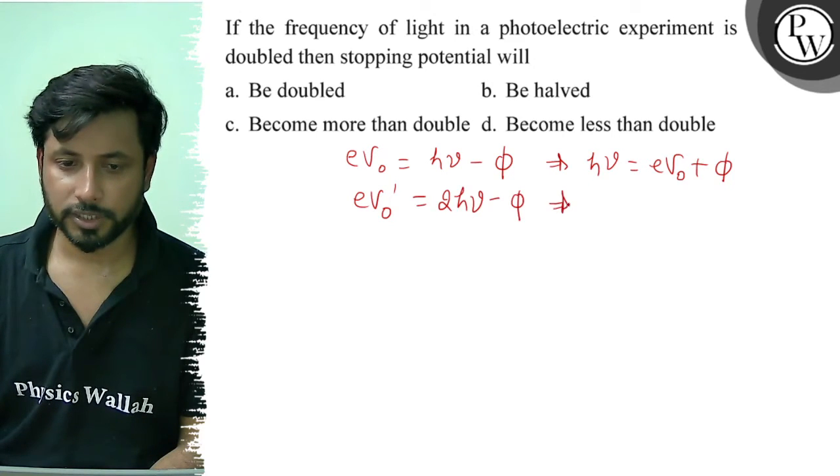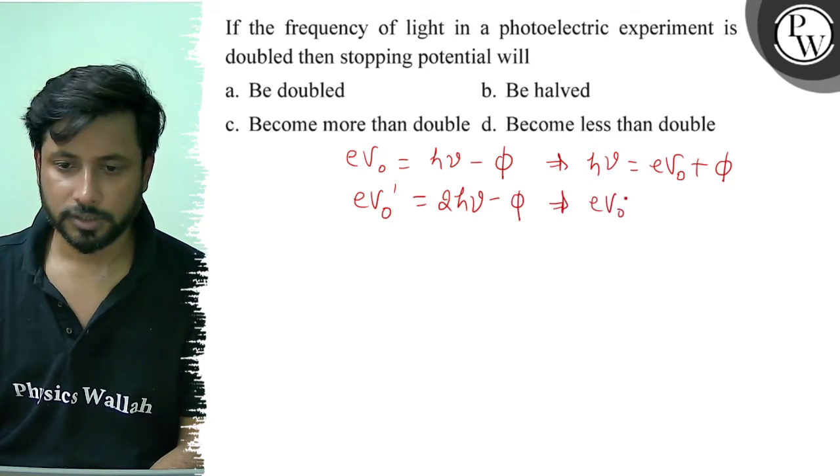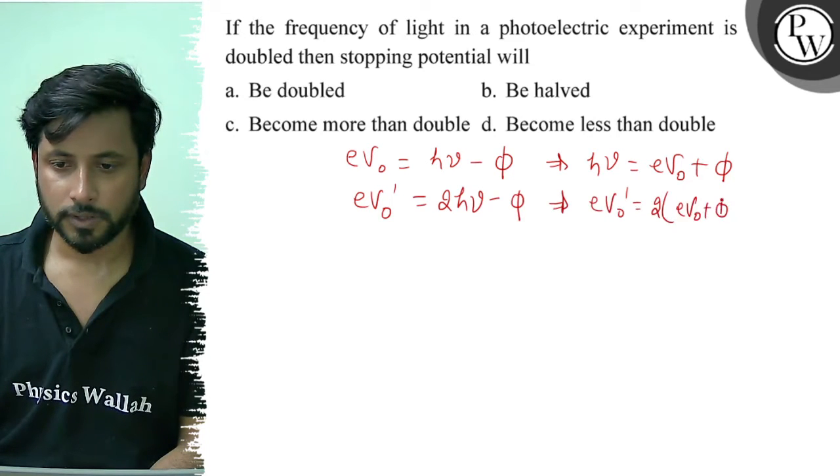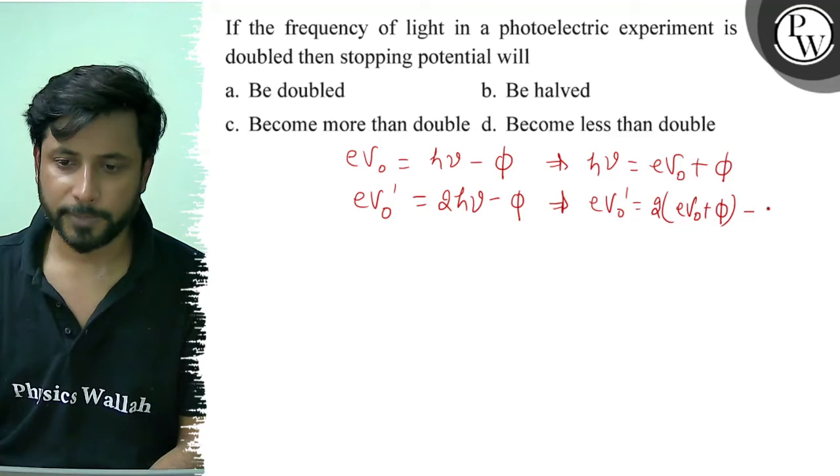Now here we will output the value of h nu. So eV₀ dash equals 2 into eV₀ plus phi minus phi.